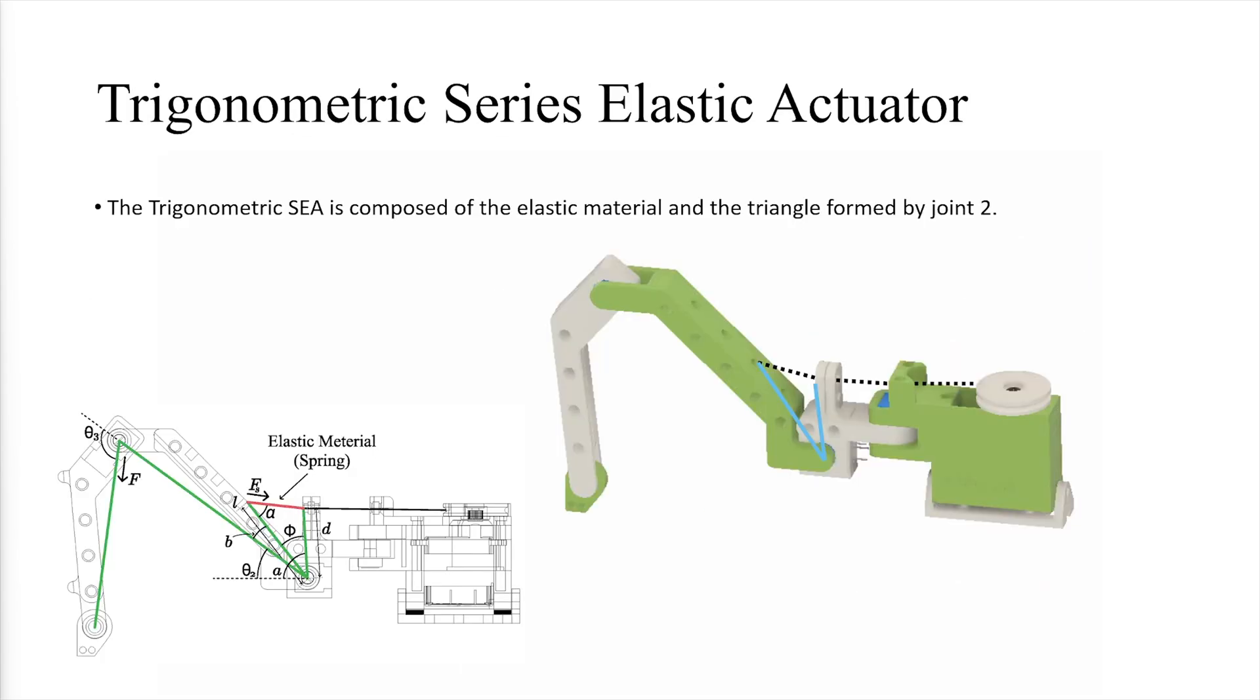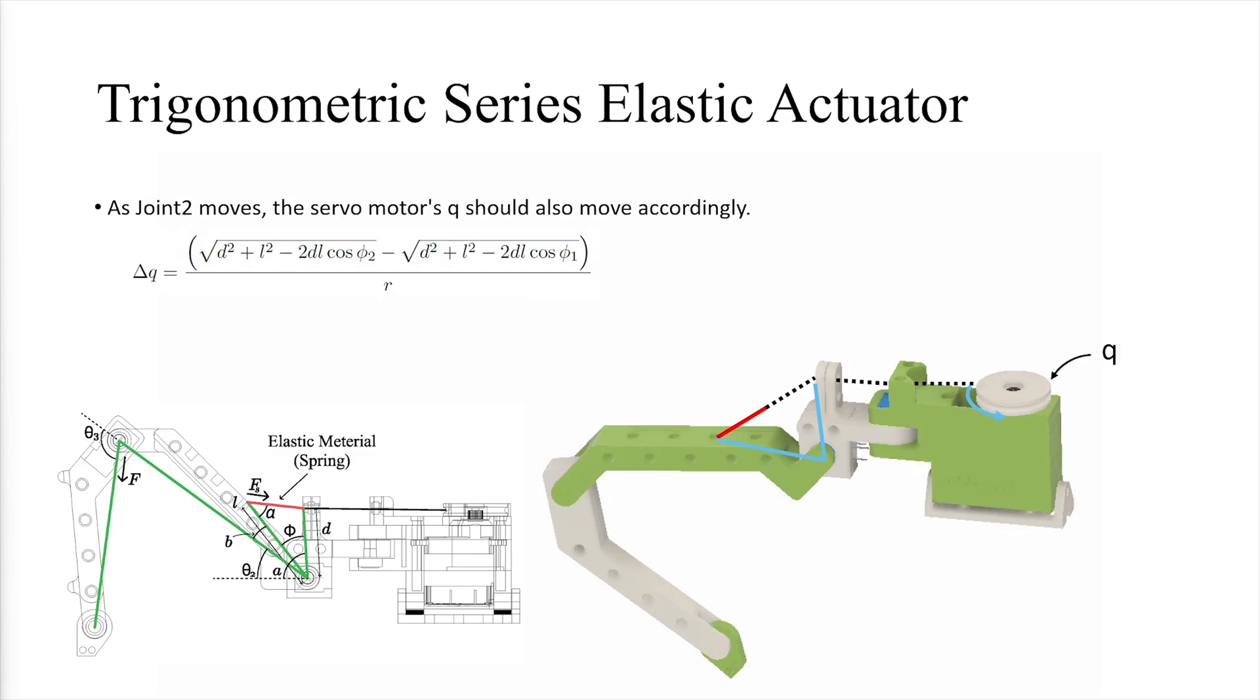Next, the working mechanism of the Trigonometric Series Elastic Actuator will be explained. The Trigonometric SEA is composed of elastic material and a triangle structure formed by joint 2. As joint 2 moves, the servo motor's angle Q must also adjust accordingly to maintain coordination.